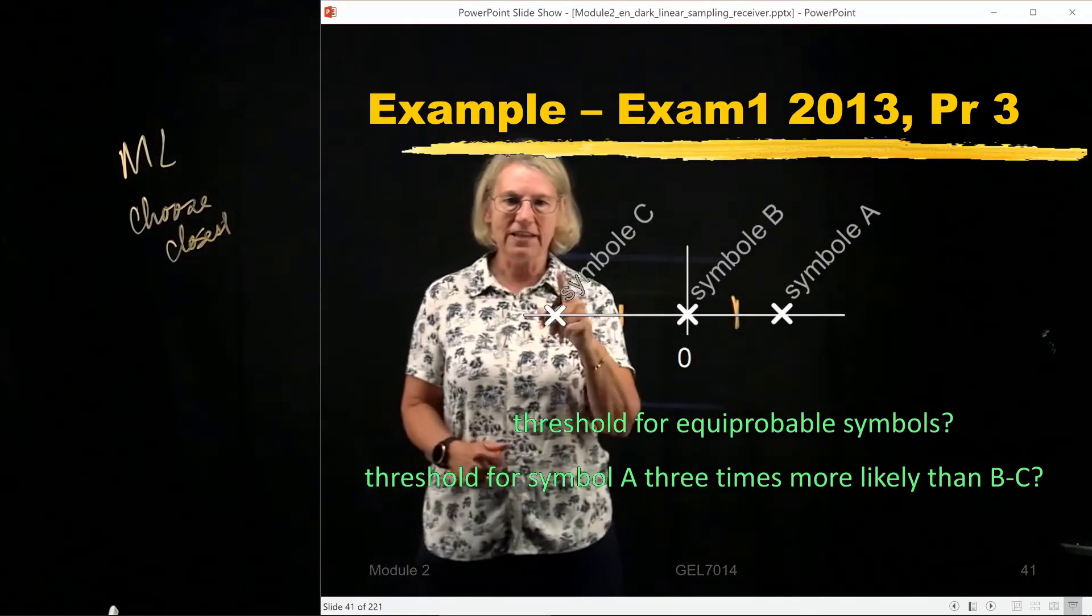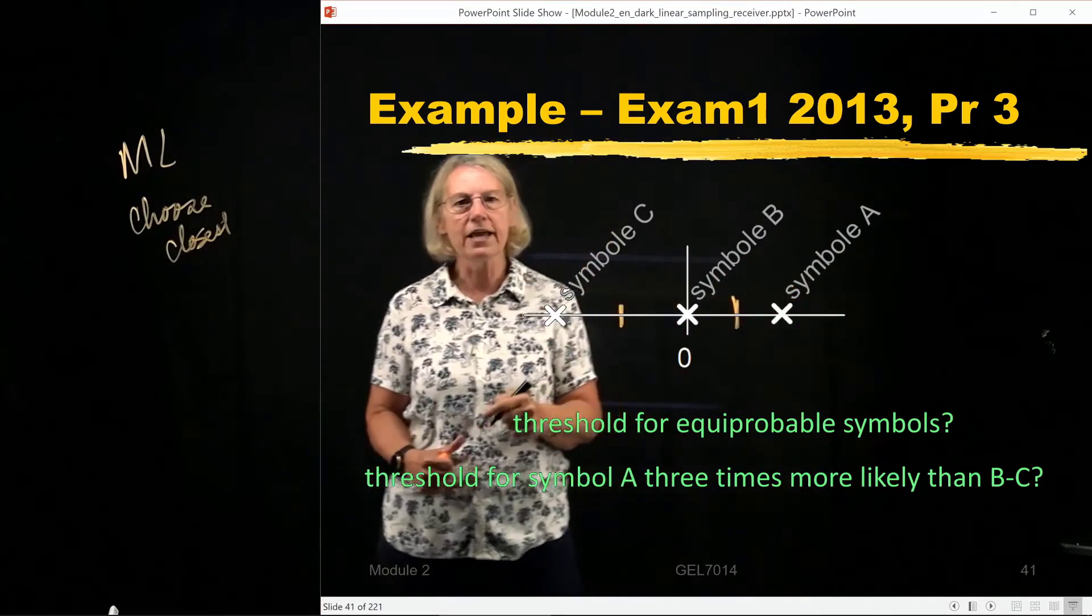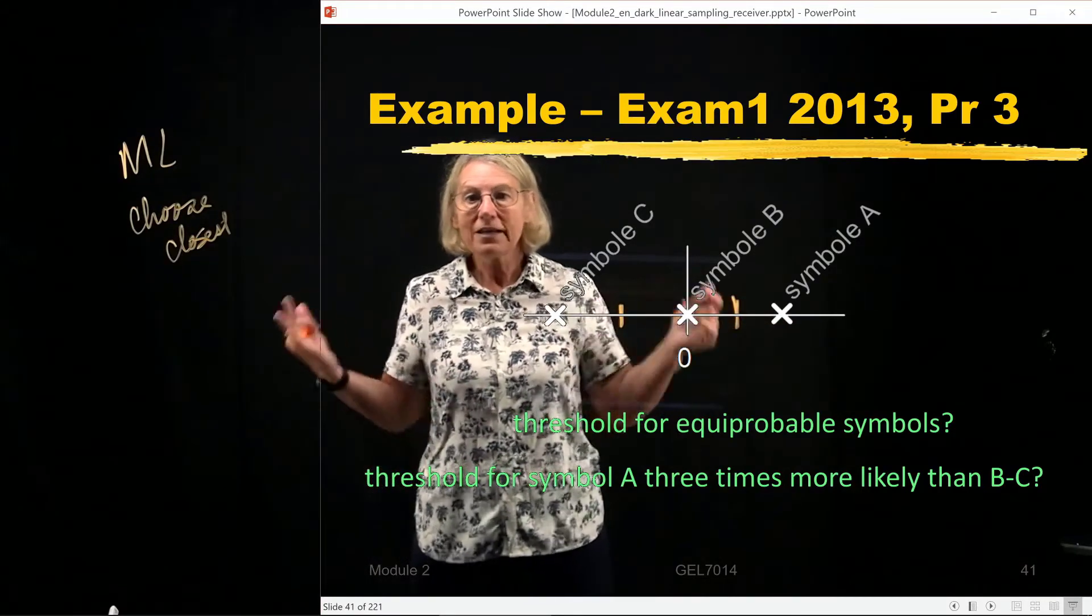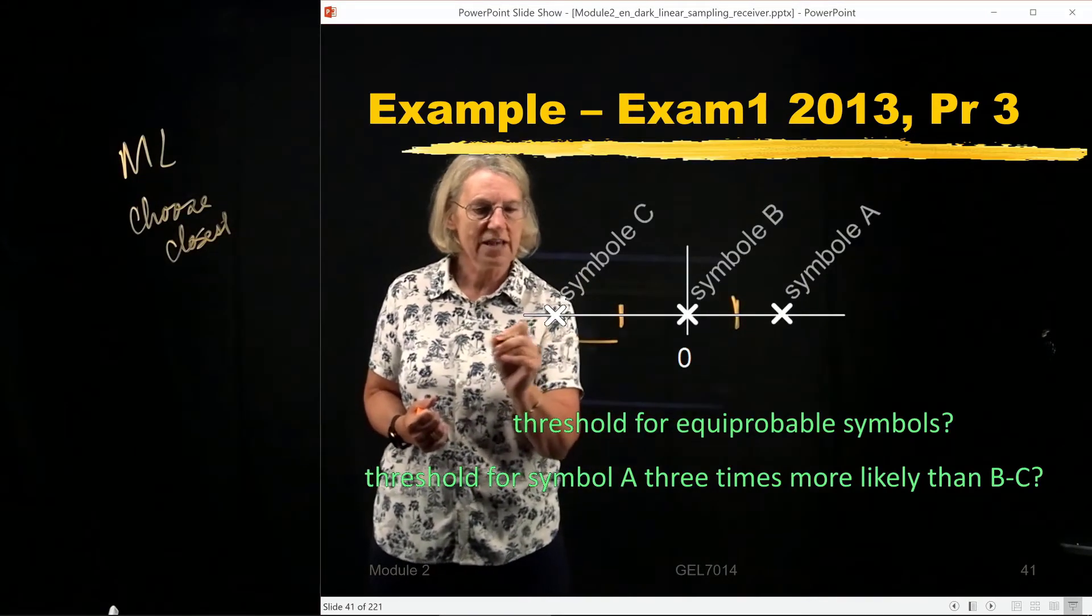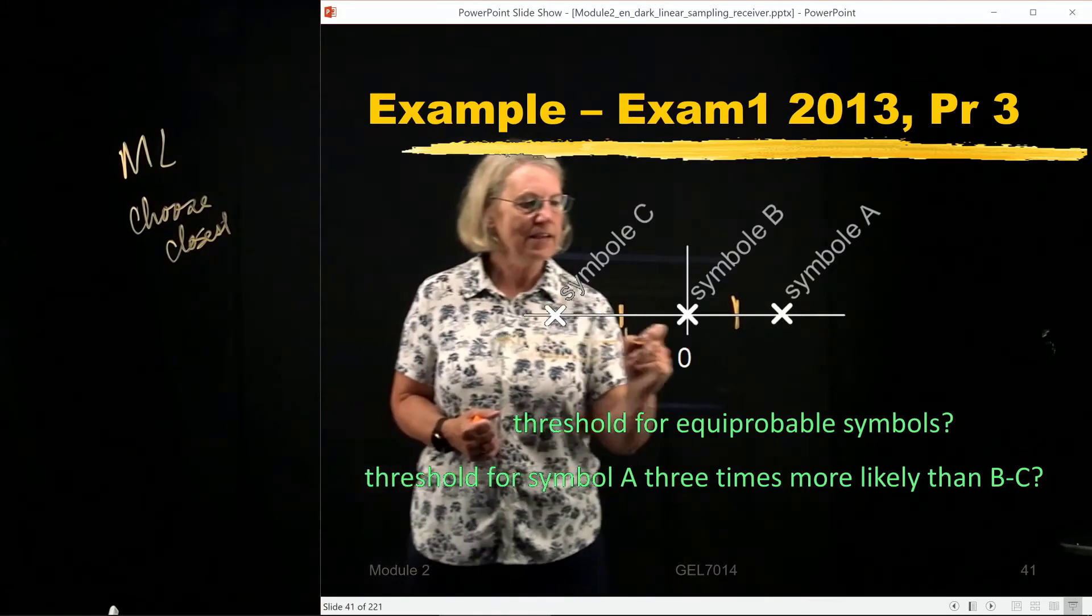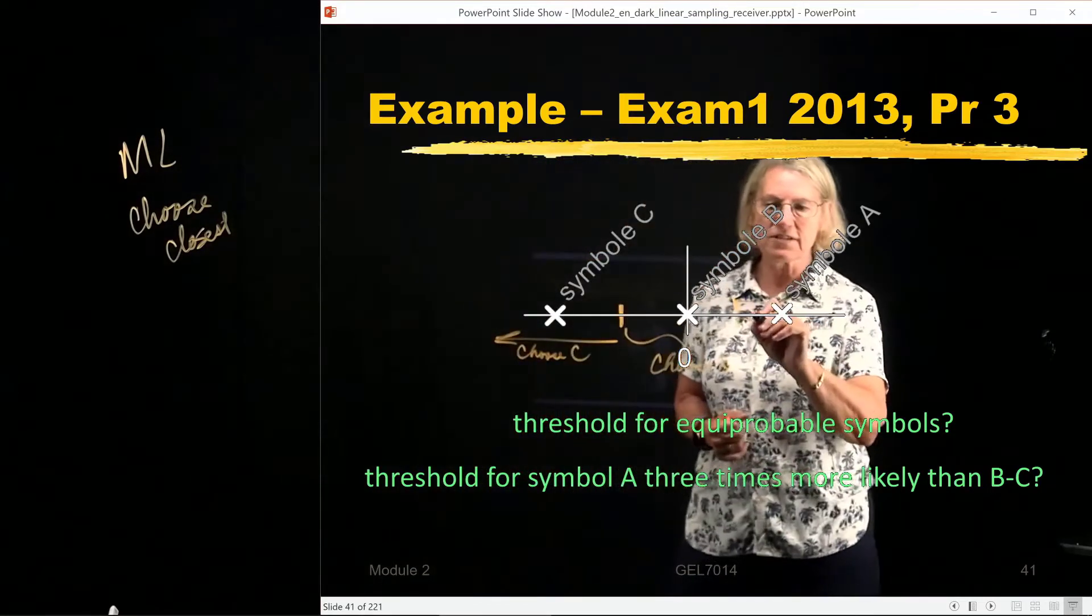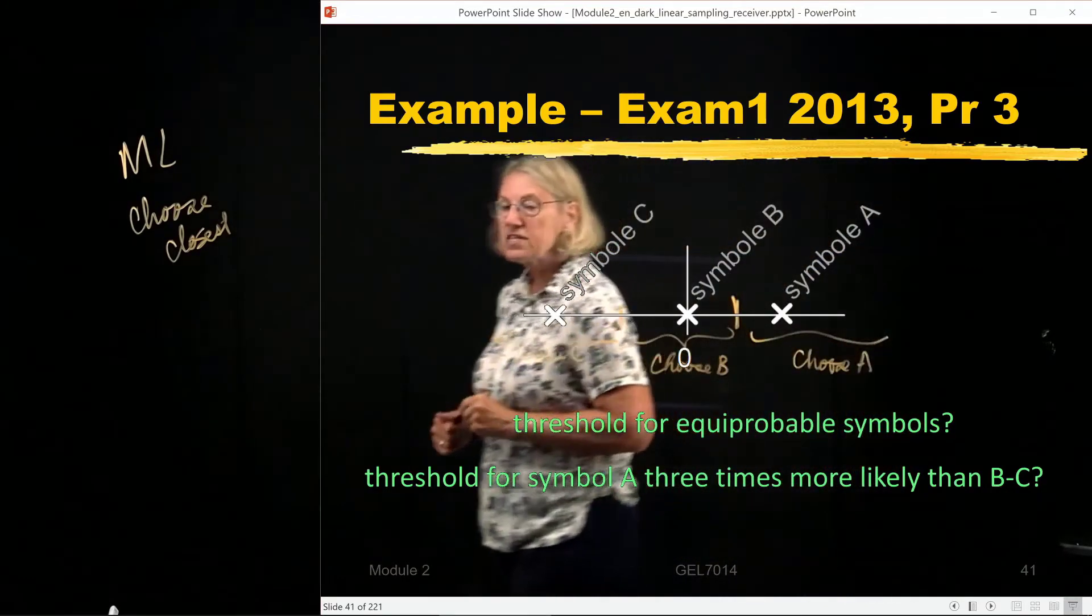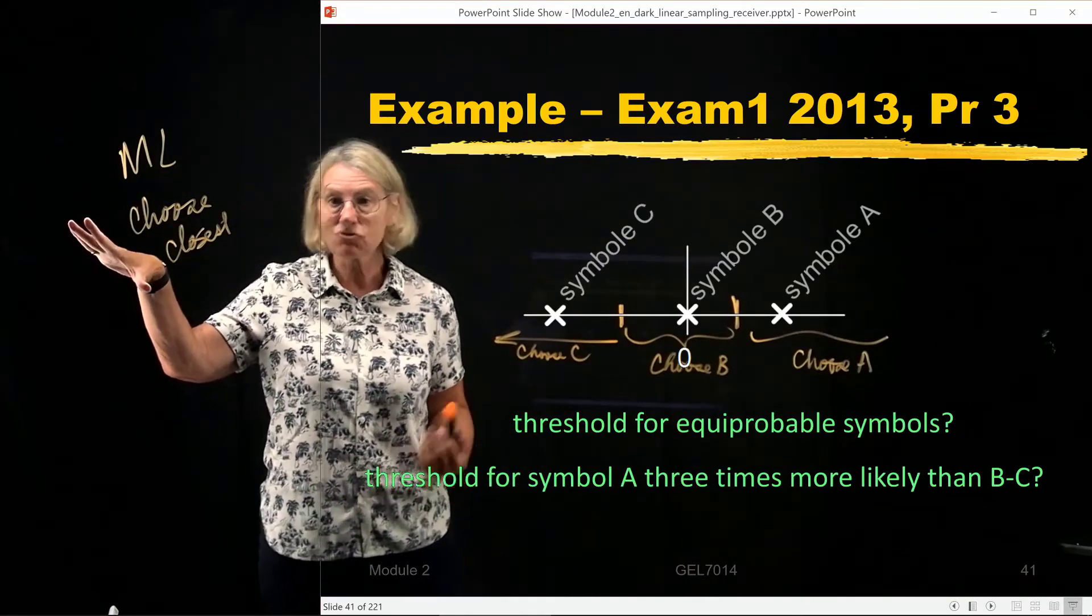So if I'm anywhere, if I land here, the closest is going to be symbol C. If I land over here, the closest is going to be symbol A. And I do that calculation of calculating the distance. But it's clear that if I use these two thresholds, anything here, I should choose C. Anything in between, I should choose B. And anything after this last threshold, I should choose A.